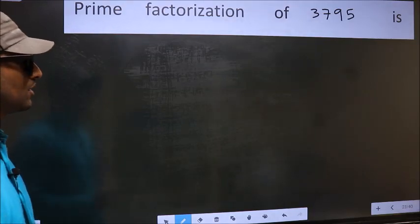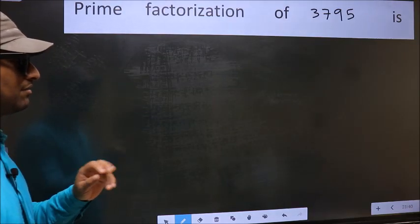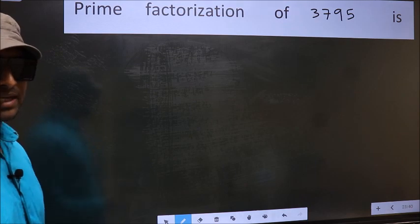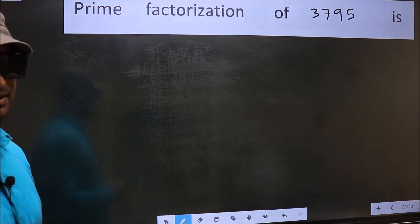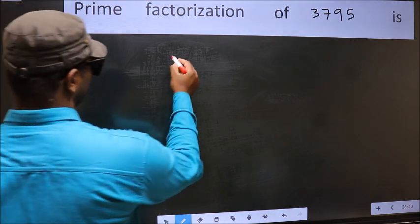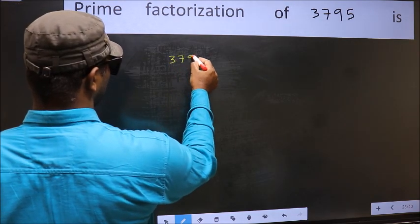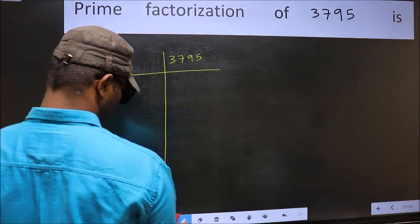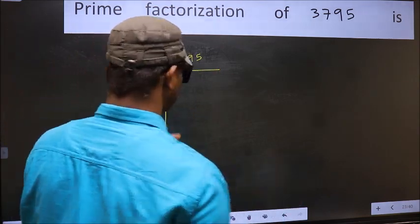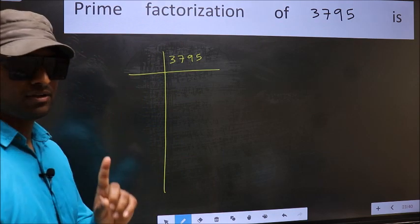Prime factorization of 3795 is. To do prime factorization, first we should frame it in this way. 3795. This is your step 1.